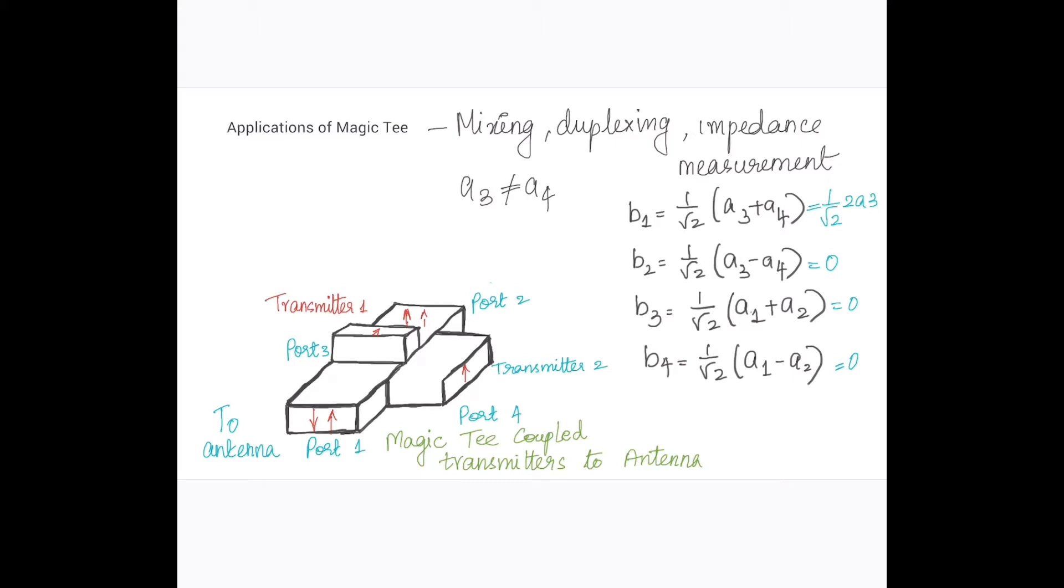So magic tee can be used for different applications like mixing where we want to mix two signals, or when we want to duplex the signals - that is when we want to transmit the signal to the antenna or transmit from the antenna to the receiver. It can function as a duplexer and also in case of impedance measurement where we want to measure an unknown impedance.